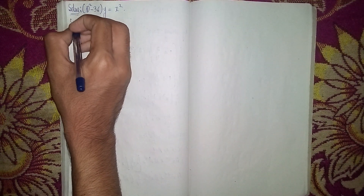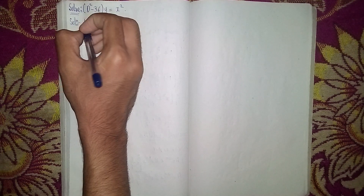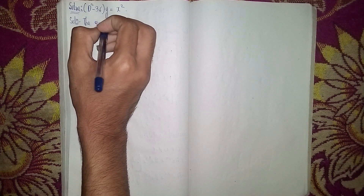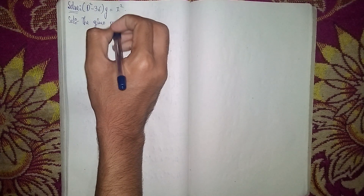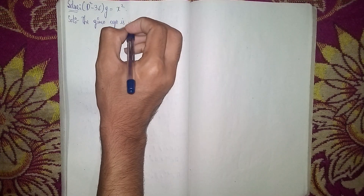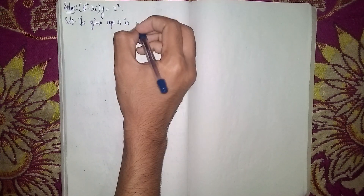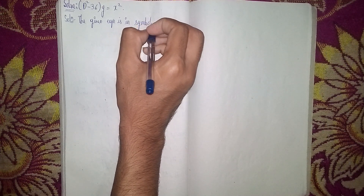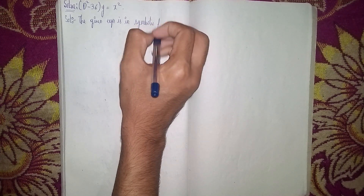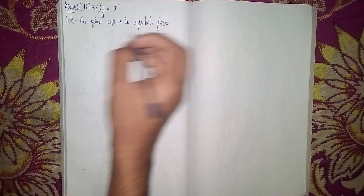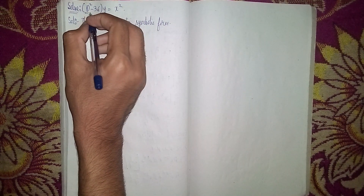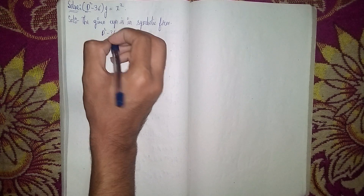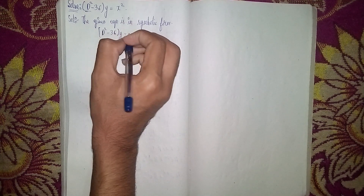First, write the solution statement. The given equation is in symbolic form — write the statement every time to get good marks. So write it in symbolic form: (D² - 36)y = x².